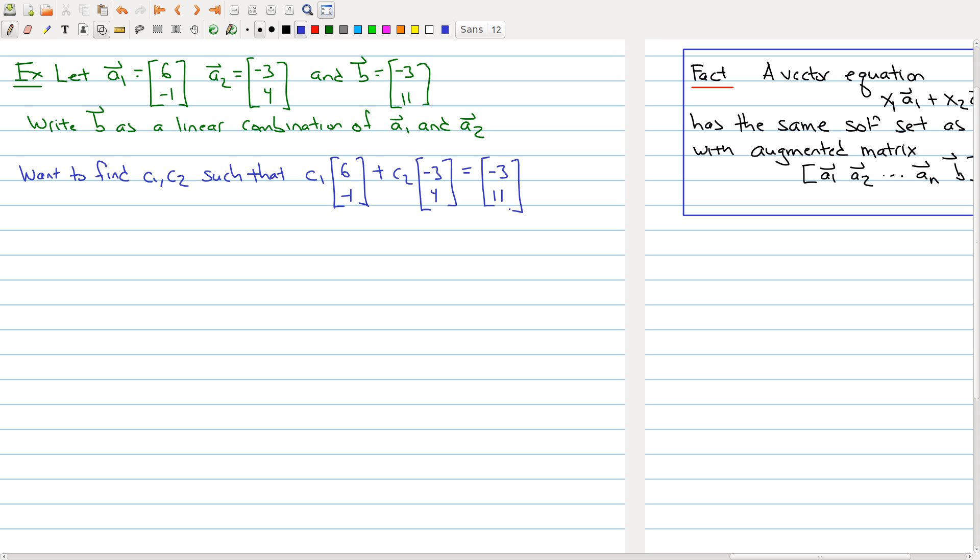Well on the left hand side we can use our properties of vector addition and scalar multiplication to rewrite it. All right, so via vector operations, the left hand side reduces to [6c₁ - 3c₂, -c₁ + 4c₂].